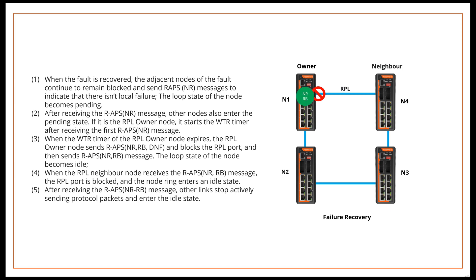After receiving this message, other nodes update their MAC table entries, and the node sending the RAPS message stops sending messages periodically and opens the previously blocked ports. The ring network has returned to its original normal state.